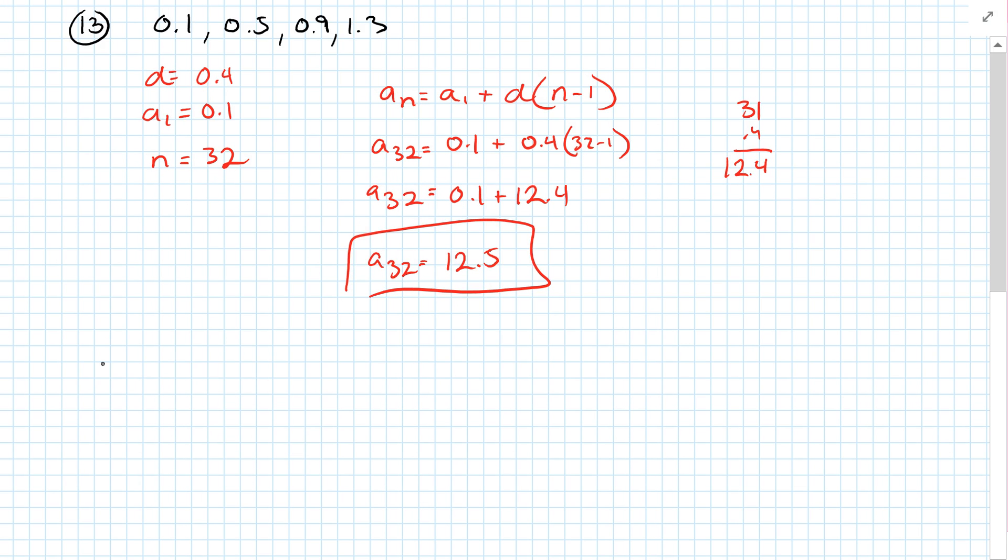Okay, 15, 17, every other odd. Find the 32nd term. So it goes 3, 1, negative 1, negative 3. Well, the common difference is negative 2.